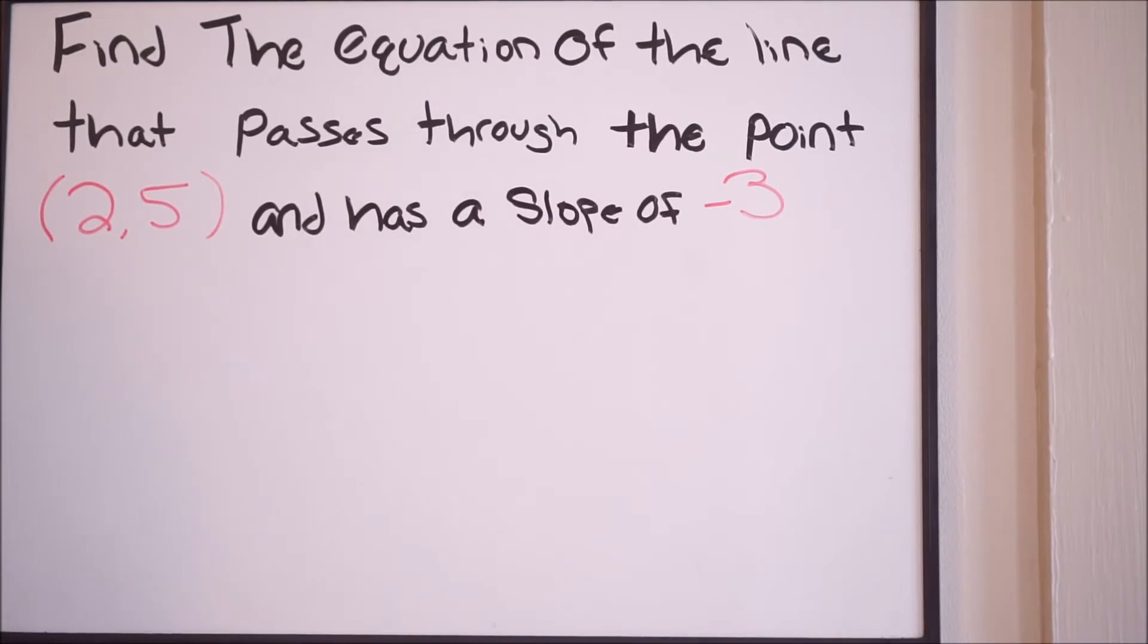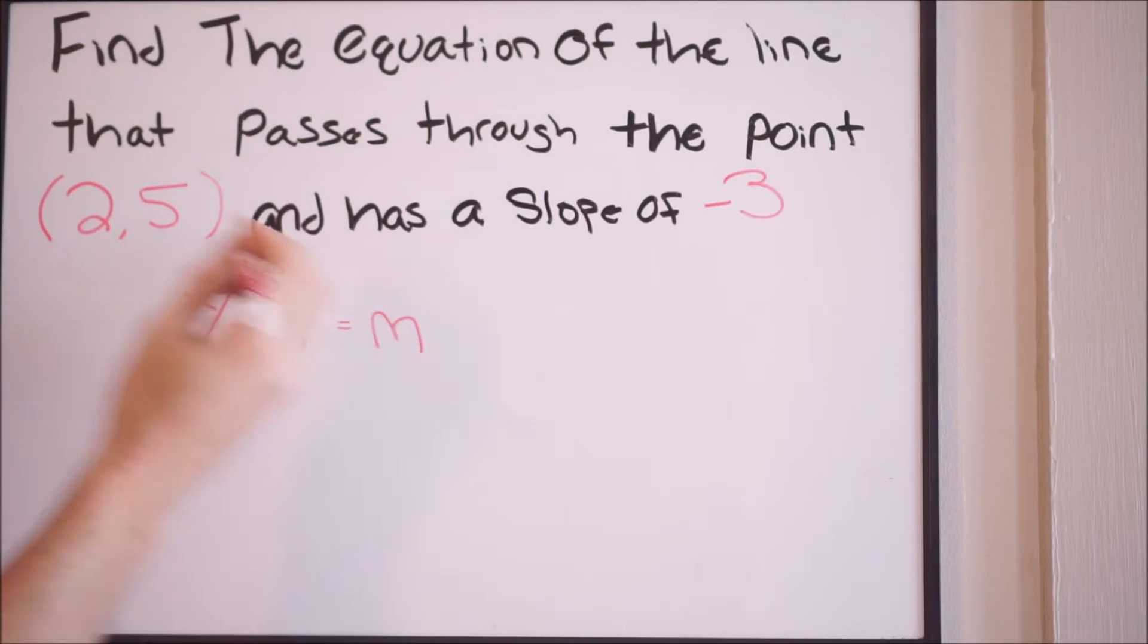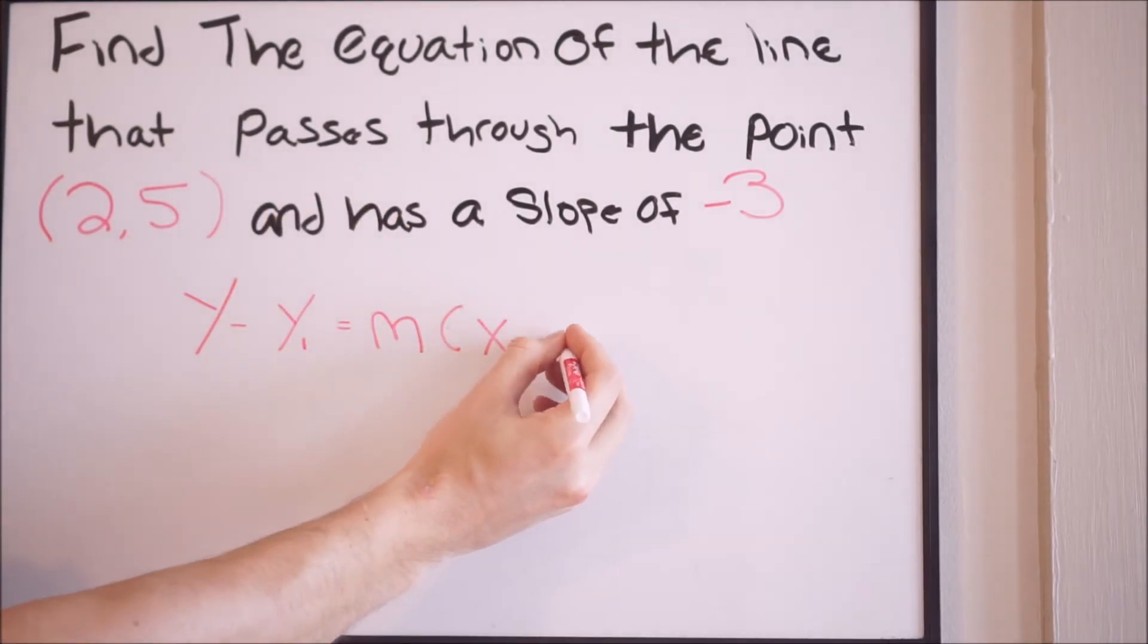Now there are two different ways in which you can do this problem. So let's go over the first way, and that's using point-slope form. If we use point-slope form, the equation is the following: we're going to have y minus y1 equal to our slope, and then we'll have x minus x1.